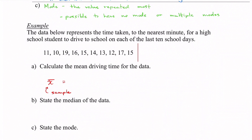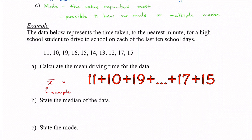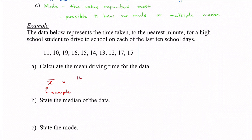Our mean is calculated by taking all of these numbers and adding them up in your calculator. When you add those all up you get 142, and there are 10 different values, so it's 142 divided by 10, which gives us 14.2. These were times measured in minutes, so our mean is 14.2 minutes.